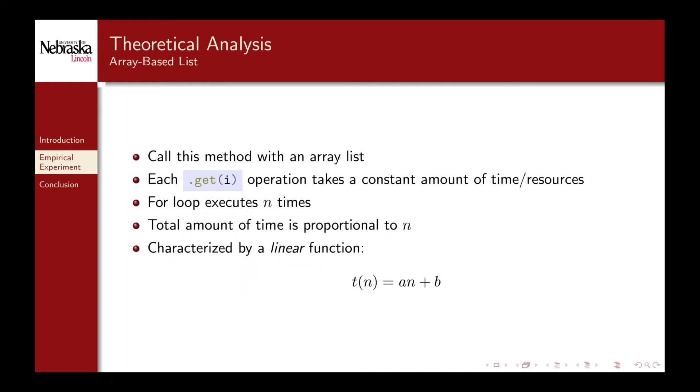Before testing it from a practical perspective let's analyze this code from a theoretical perspective. If we pass it in an array list we can reasonably expect that each get method call takes a constant amount of time or resources. The for loop executes n times, the size of the list. Thus the total time that this method takes to execute is going to be proportional to n. We can characterize this behavior by modeling it with a linear function.